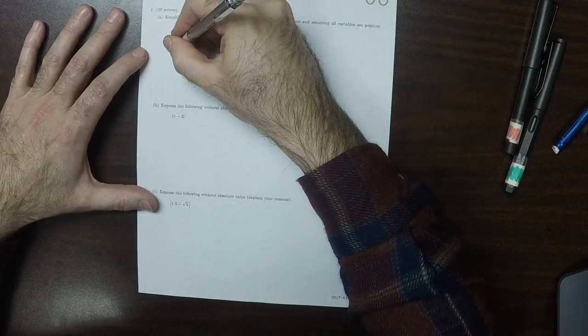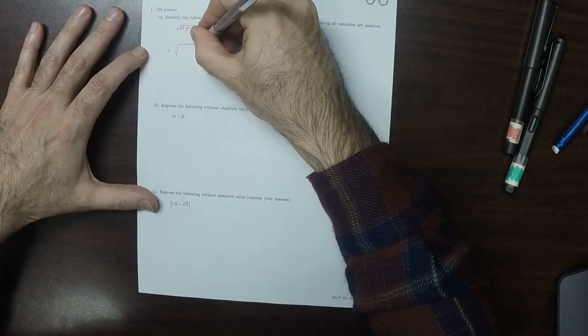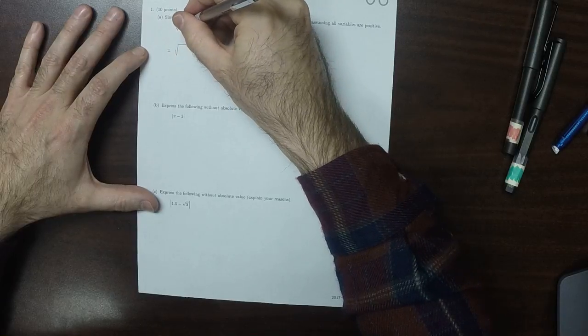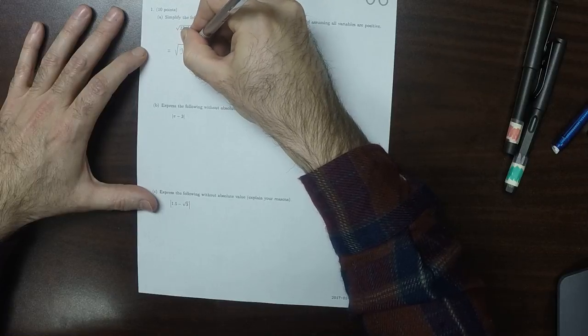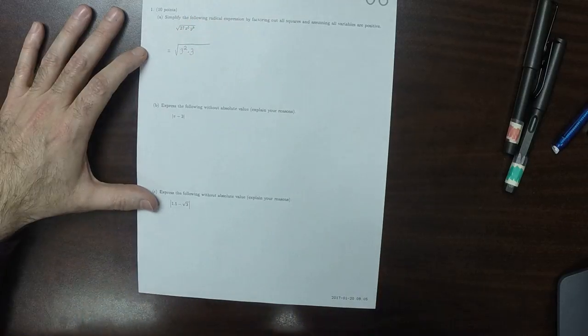So this could be written as, well, 27, that's 9 times 3, so that's 3 squared times 3. That's 27.